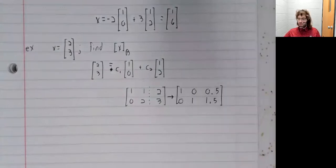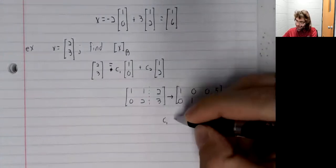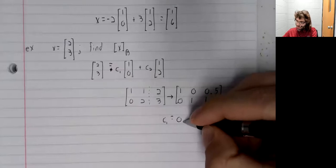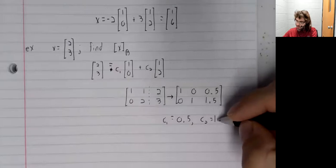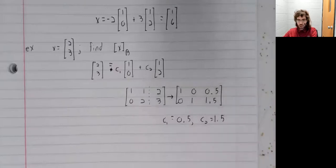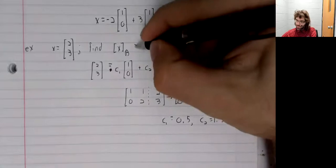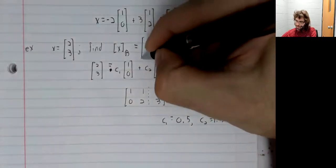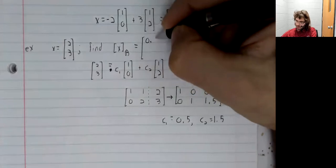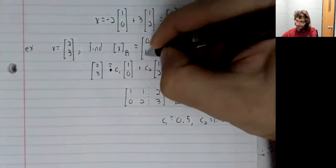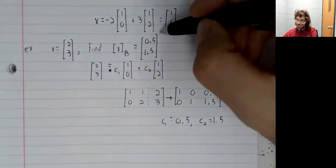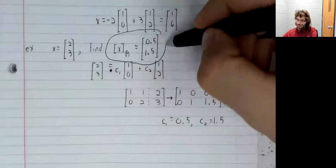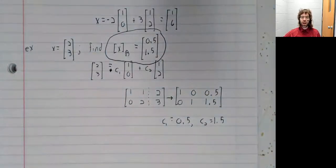And we get that c1 is 0.5, c2 is 1.5. And those are the coordinates of the coordinate vector that we set out to find. And that's all.